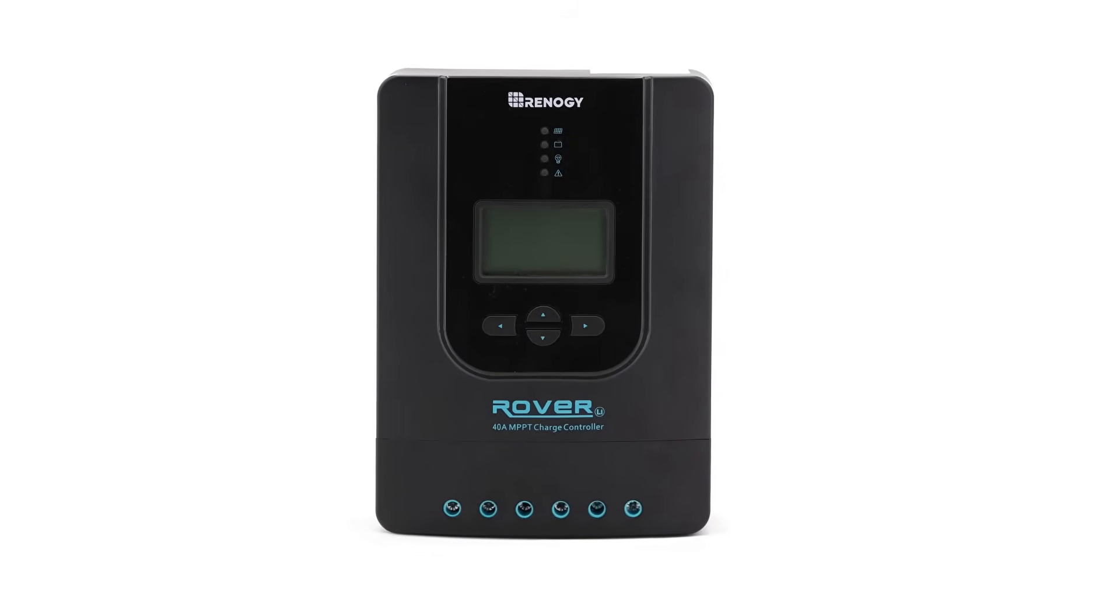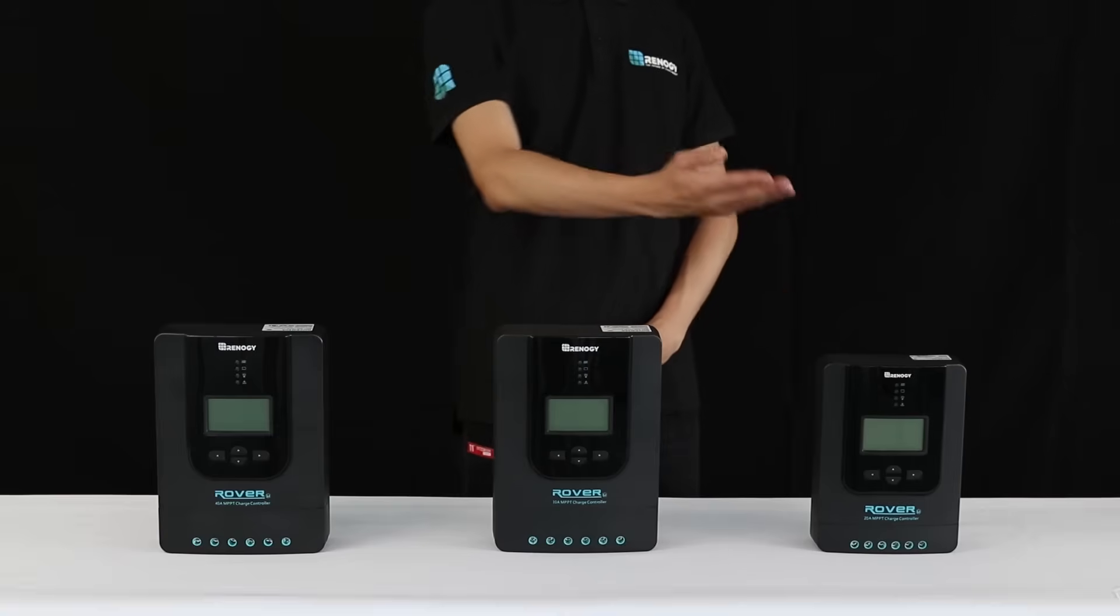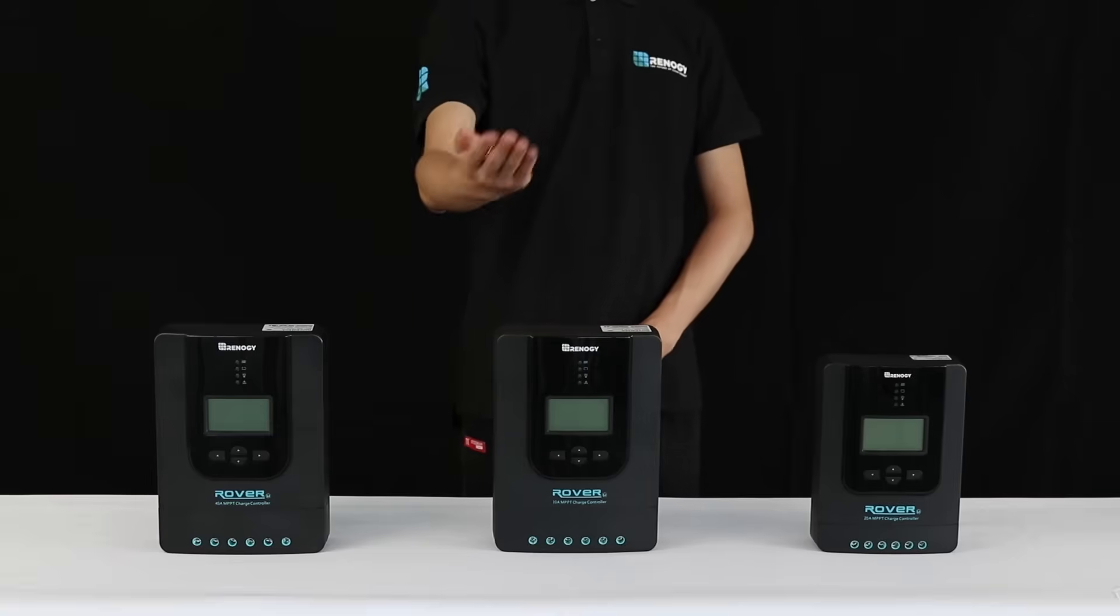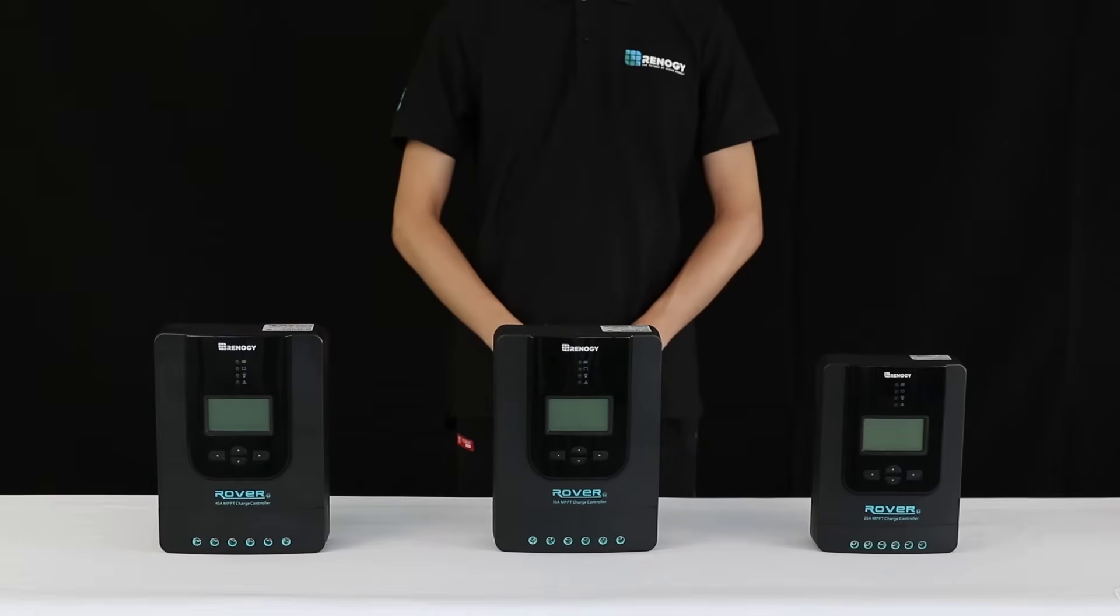The Rover charge controller comes in a 20 amp, 30 amp, and 40 amp version. The Rover can charge 12 or 24 volt systems, and the 40 amp version can support 520 watts on a 12 volt system or 1040 watts on a 24 volt system.